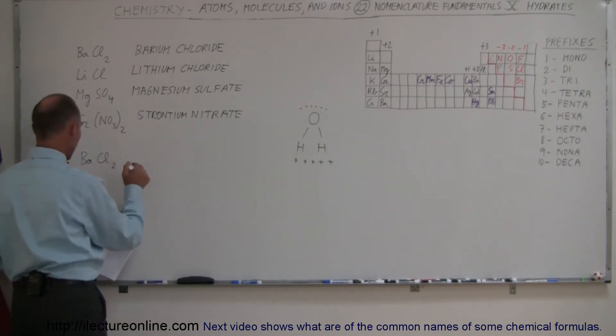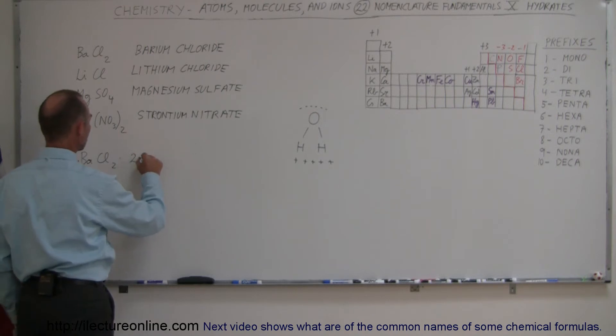So the way is we place a dot there, and then we have two water molecules that will bond weakly to the barium chloride. And so what do we name that? And so same with lithium chloride. Lithium chloride will bond with a single water molecule.